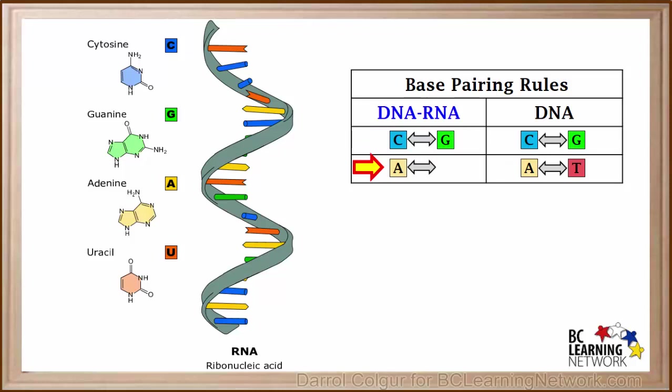And adenine on DNA cannot pair with a thymine on RNA, because RNA has no thymine. Instead of thymine, RNA contains the base uracil. So an adenine on DNA will always pair with a uracil on RNA. Similarly, a uracil on RNA will pair with an adenine on DNA.